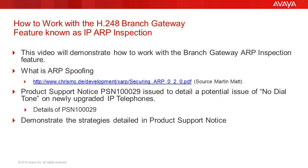ARP spoofing, using a high-level description, permits an attacker to take over an IP address of an existing device and substitute its own MAC address to possibly receive destination packets for the real device. There are other methods the attacker can employ for a DOS attack, and the URL shown provides a nice explanation that can be reviewed.